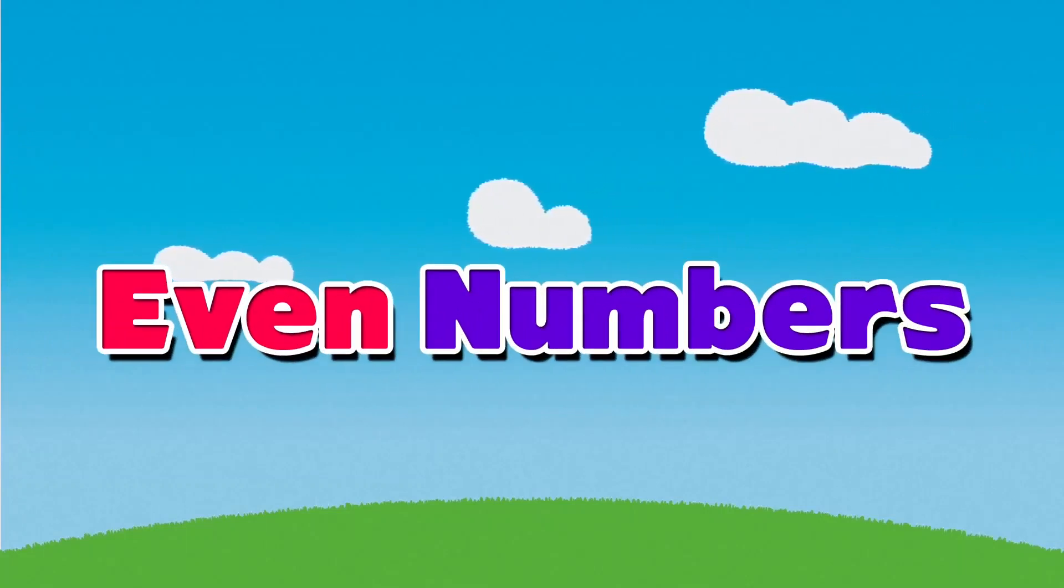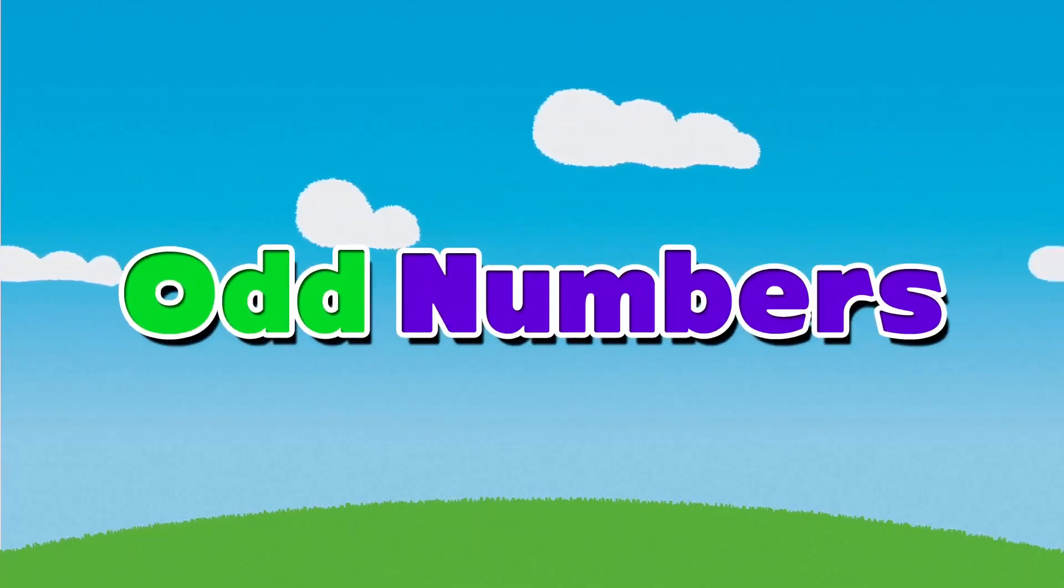Even numbers are any whole number that can be divided by two. Odd numbers are whole numbers that can't be divided by two.